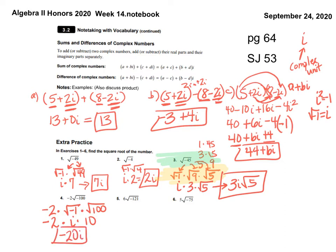For number 5: 6 times the square root of negative 1 times the square root of 121. 6 times i times 11. 6 times i is 6i. 6i times 11 is 66i.